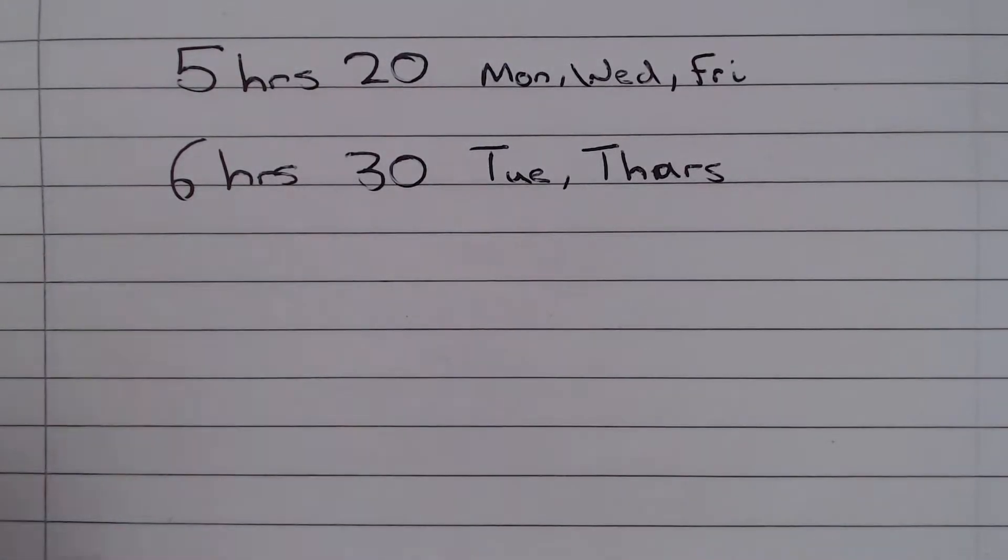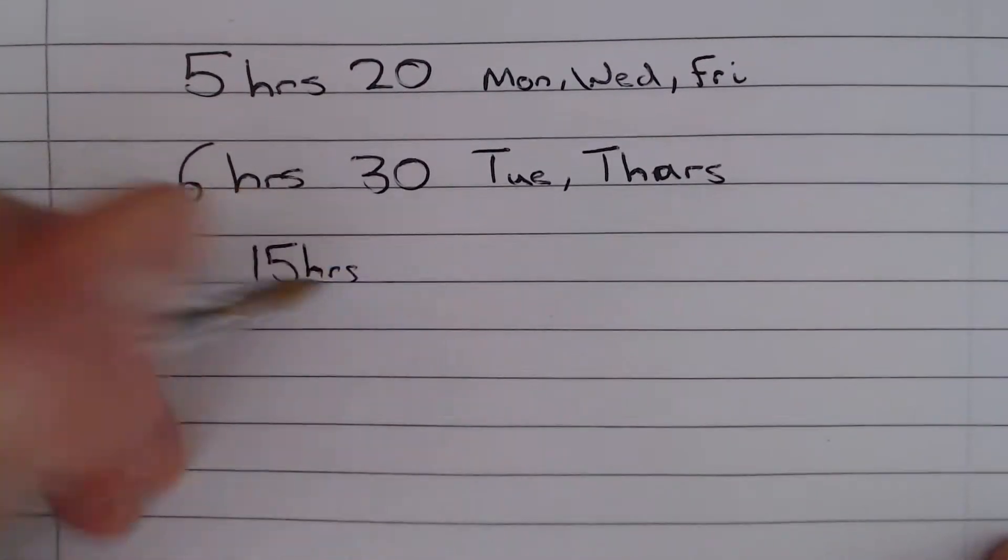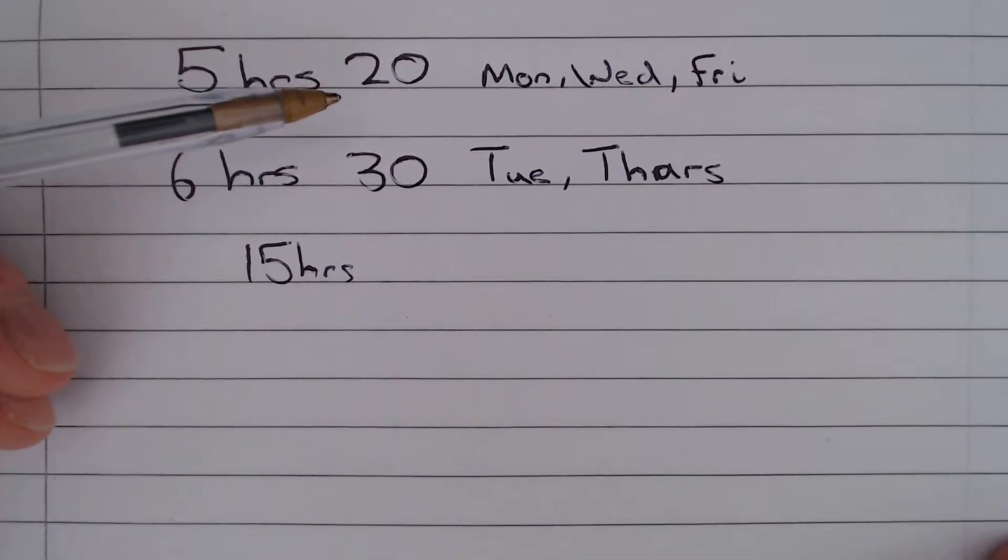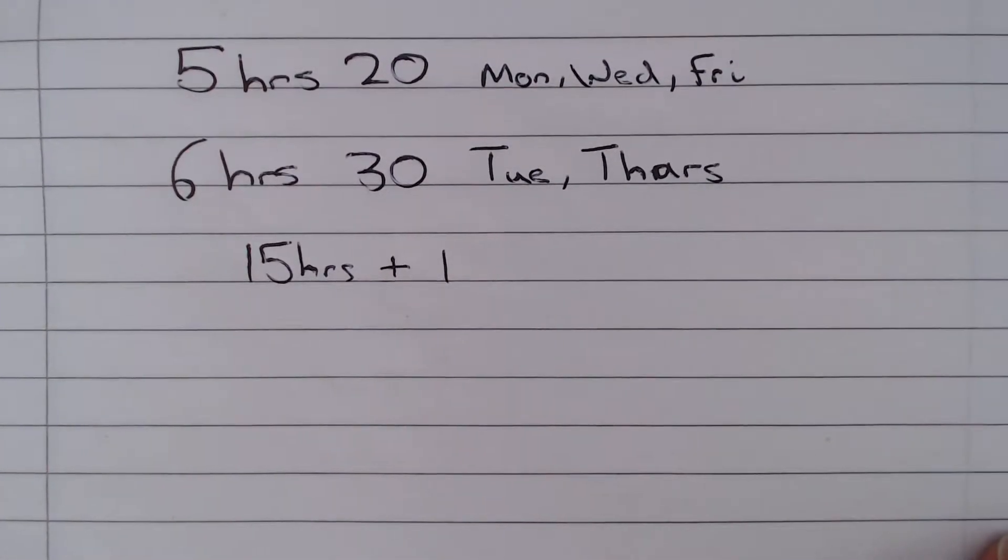So 5 hours times 3 gives us 15 hours. 20 minutes times 3 gives us 60 minutes, which is another 1 hour.